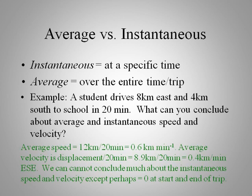Okay so here we go. The average speed is our total distance, so 12 kilometers divided by 20 minutes gives us 0.6 kilometers per minute.